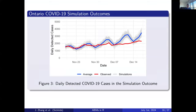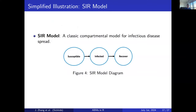Here are the results. We report the daily detected COVID-19 cases as the simulation outcome. The blue curve is the average across 100 repetitions of the simulation. The red curve is the observed number for Ontario province at that time. Each gray curve represents one individual round of the simulation.